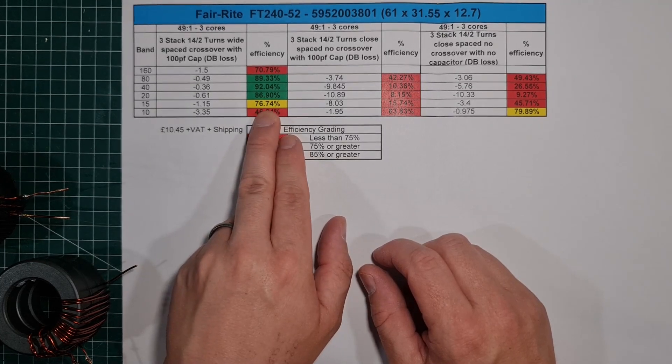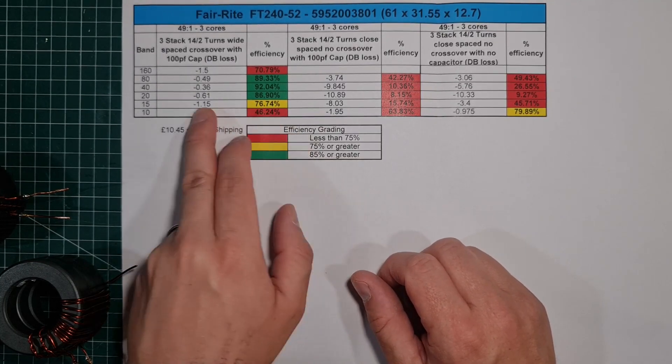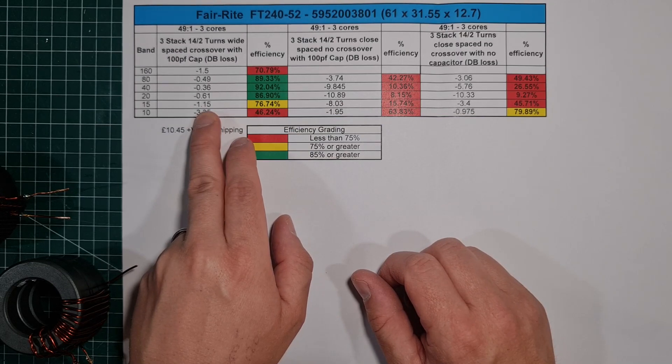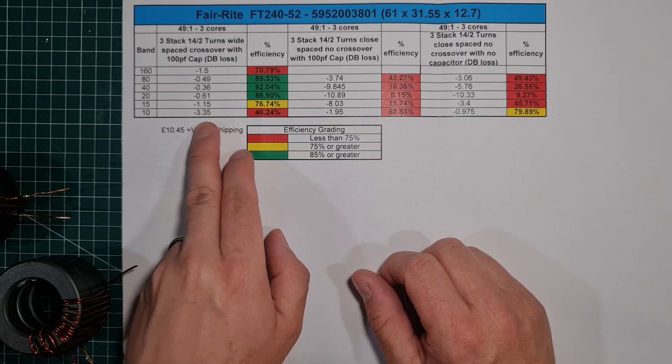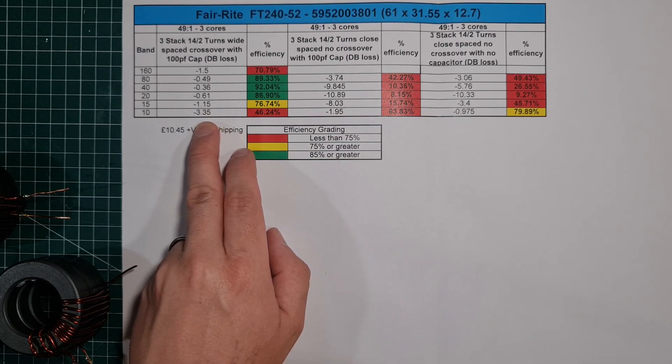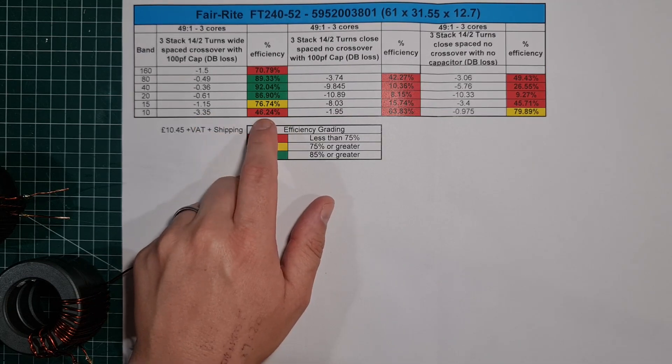When you look down at 15, it's getting down there, starting to get a lot more loss, 1.15. You look at 10, you're losing more than half your power. But that's maybe to be expected using 52 material.